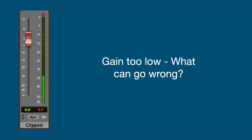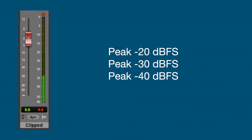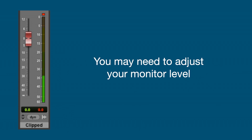So that was easy — we've covered half the ground already. But what if you set your input gain too low? What can go wrong then? I have three examples: in the first I've set the peak to be around about minus 20, the second round about minus 30, and the third round about minus 40. These examples will be rather quiet, but we'll take a closer look in a moment.